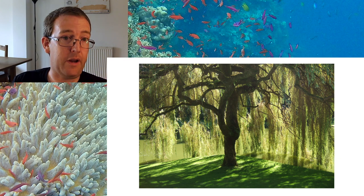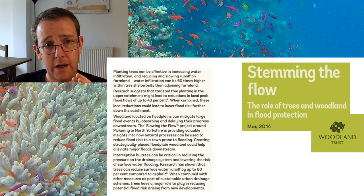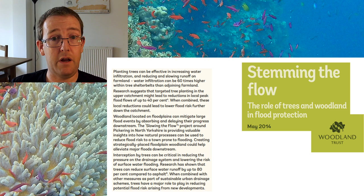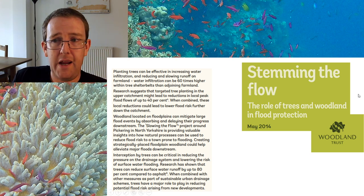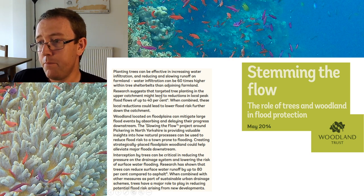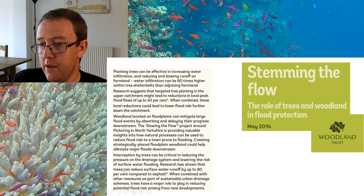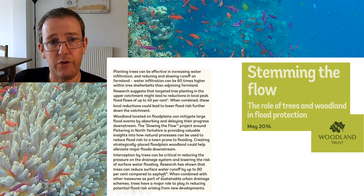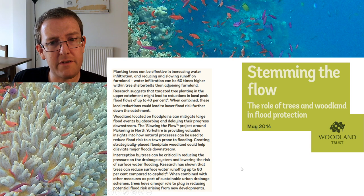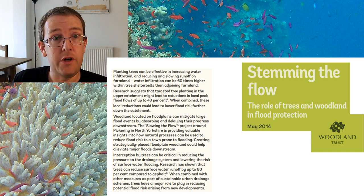For the economic argument, here is a paper from the Woodland Trust published in May 2014 showing how effective trees can be at preventing flooding. The data shows that water infiltration is 60 times higher within tree shelter belts than in adjoining farmland. Peak flood flows are reduced by 40 percent, and surface runoff is reduced by 80 percent compared to asphalt. So if you build on and tarmac a floodplain versus planting trees, you get an 80-fold difference. The conclusion is quite rightly that trees are a very good flood prevention method.